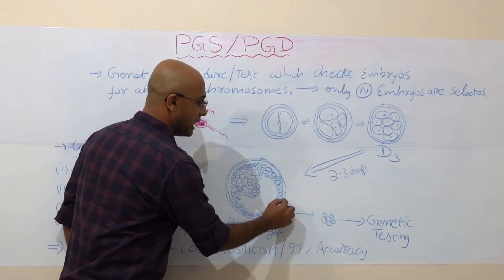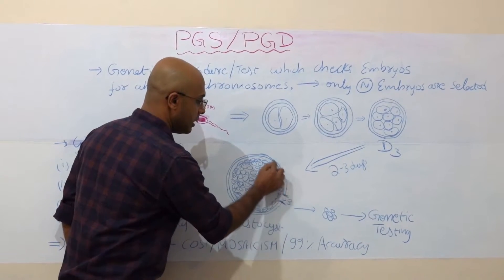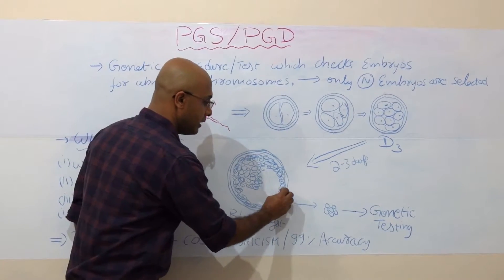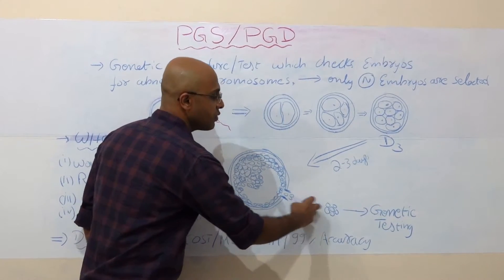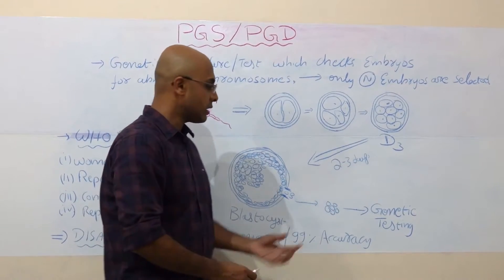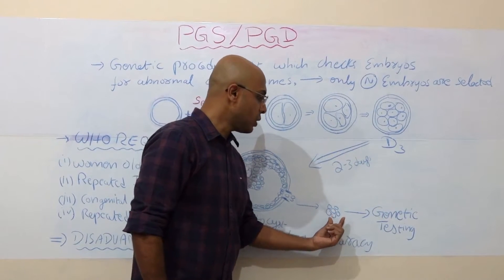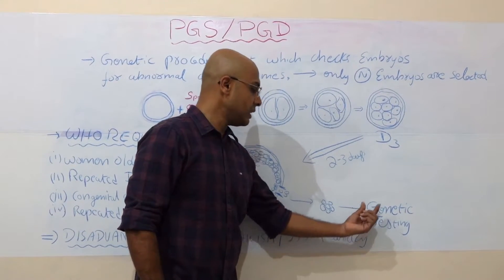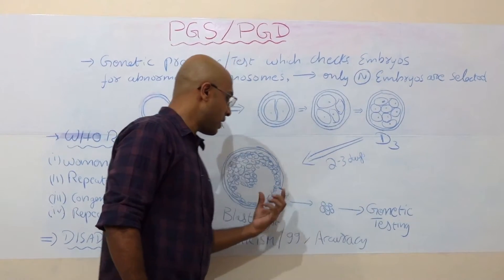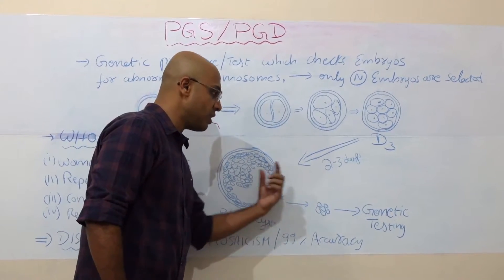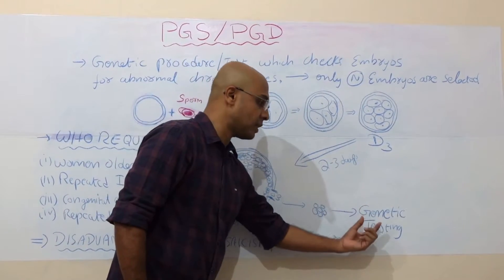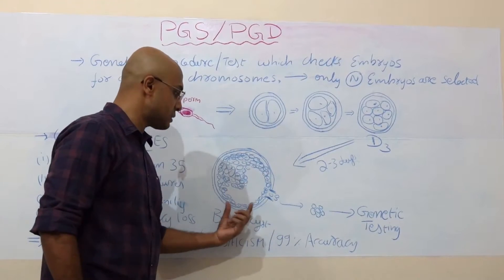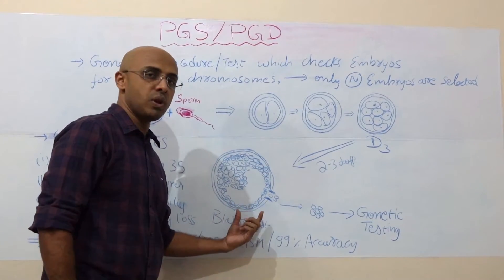Using a laser, we make a small hole on the shell of the embryo and suck out a few cells — around 5 to 6 cells — and perform genetic testing on them and interpret the result. If the biopsy from a particular embryo shows normal results after genetic testing, we interpret that embryo as chromosomally normal.